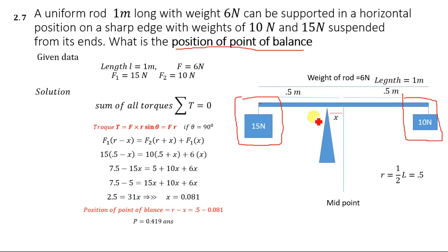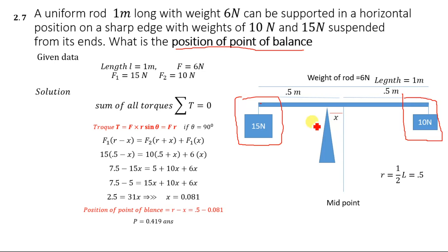We will determine the position of the point of balance using the second condition of equilibrium, which states that the sum of all torques equals zero, or the sum of all clockwise torques equals the sum of all anti-clockwise torques. Since the 15 newton mass is greater than the 10 newton mass, the point of balance will shift from the midpoint toward the 15 newton weight.